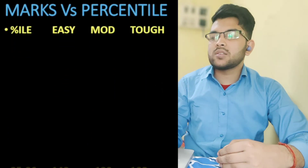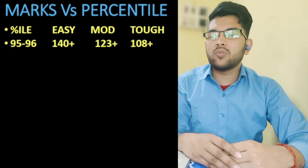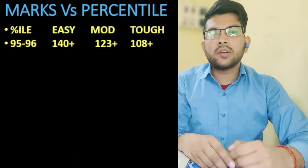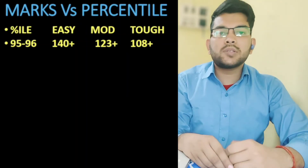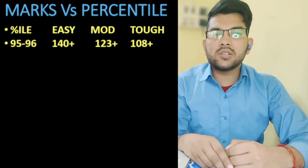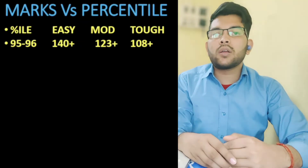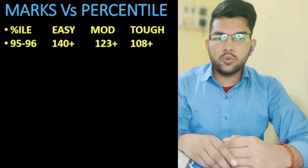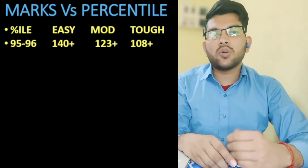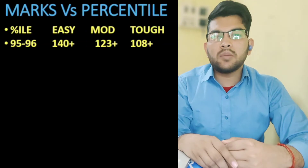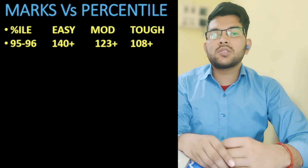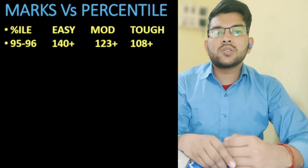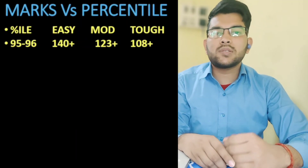For 95 to 96 percentile, marks will be 140, 123, and 108. Note that due to only two attempts this year, the data has changed slightly from my earlier video which considered four attempts — at two attempts you get better percentile at the same marks. For 93 to 95 percentile: easy 128, moderate 110, tough 97. For 90 to 93 percentile: 120, 98, and 88. For 85 to 90 percentile: 108, 88, and 80. For 80 to 85 percentile: 100, 78, and 70.